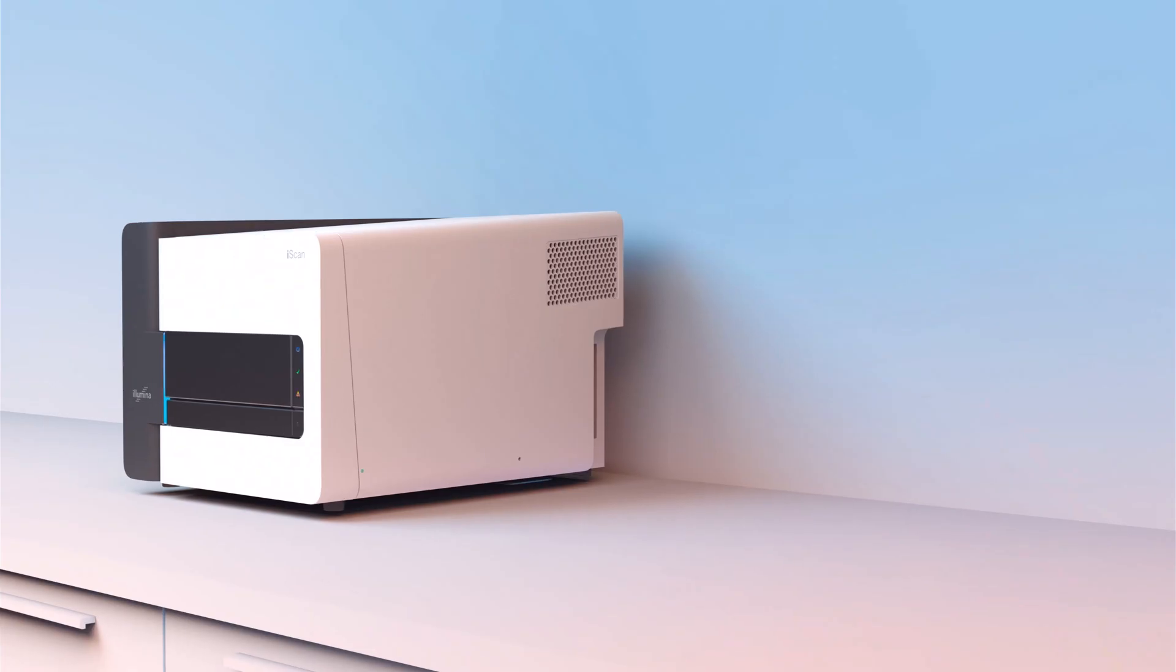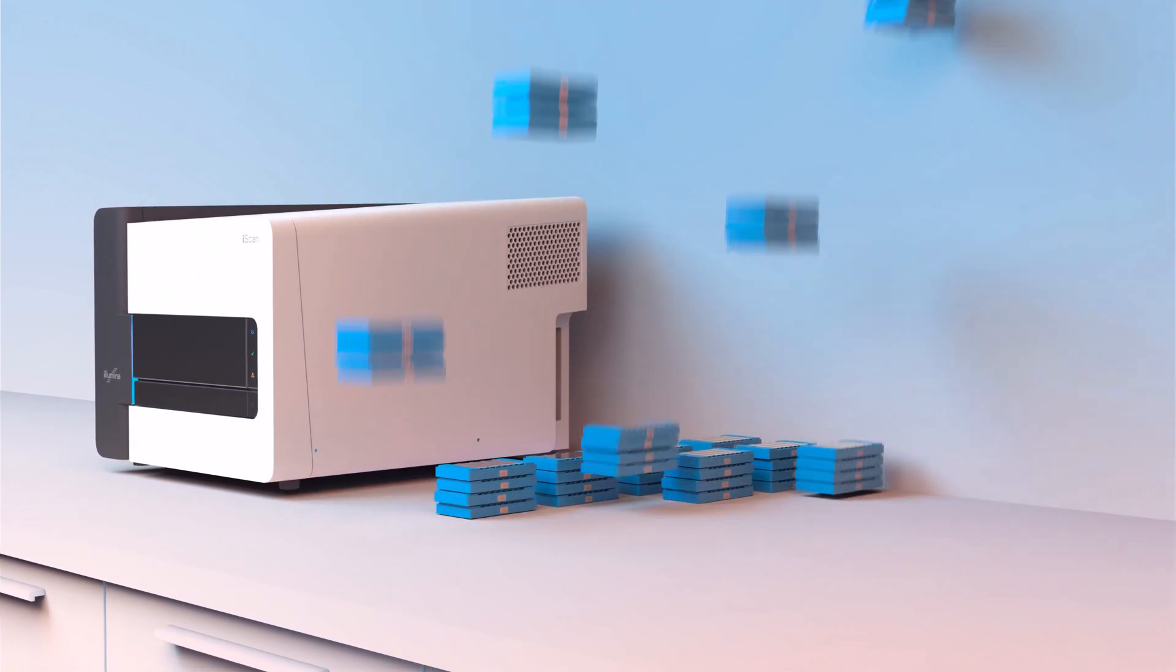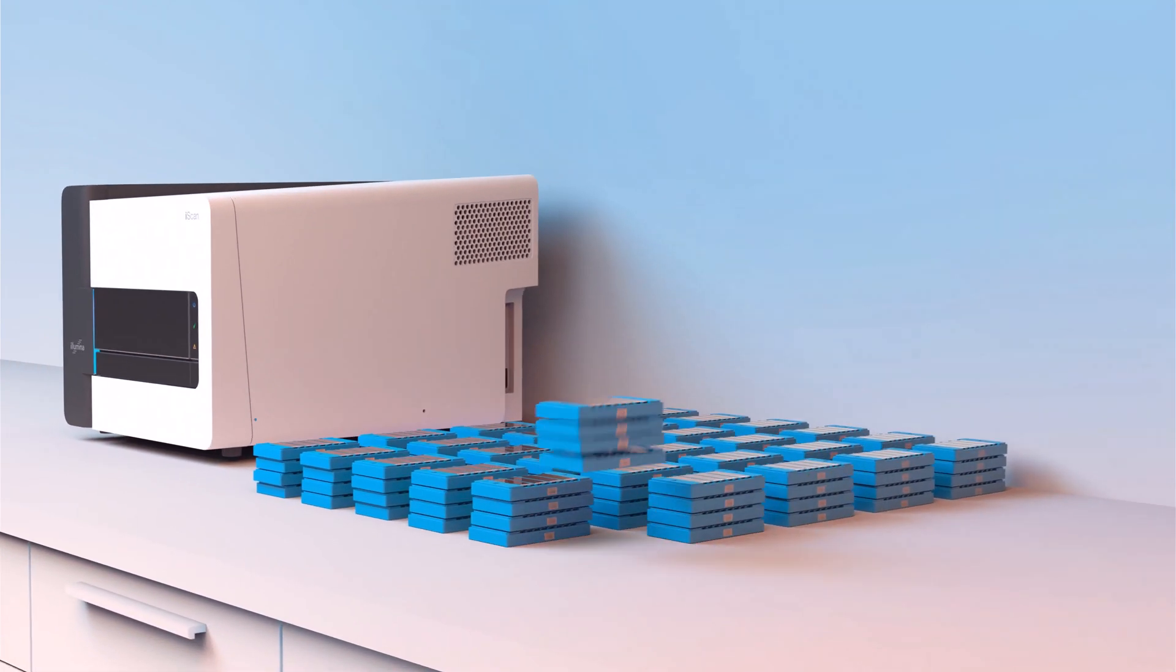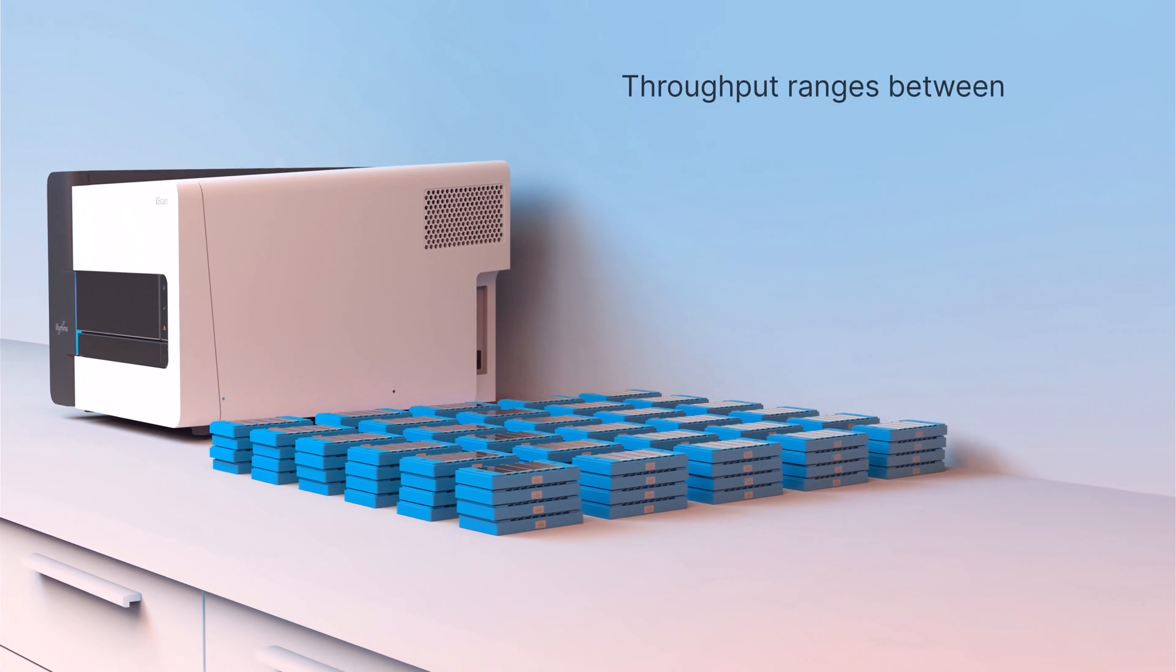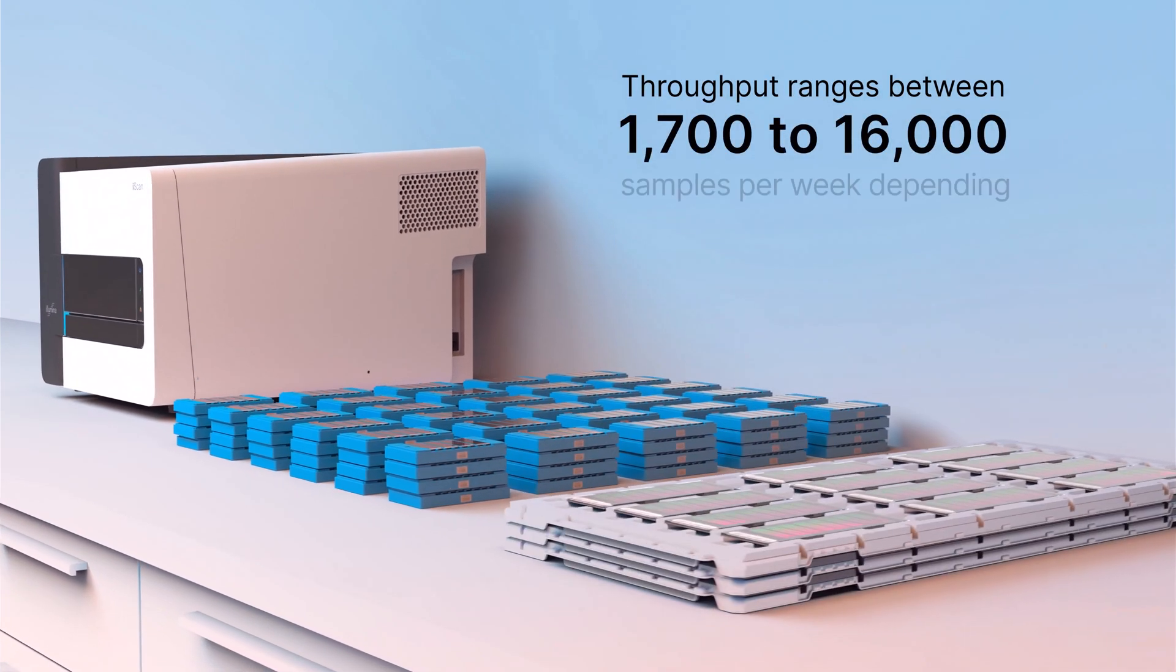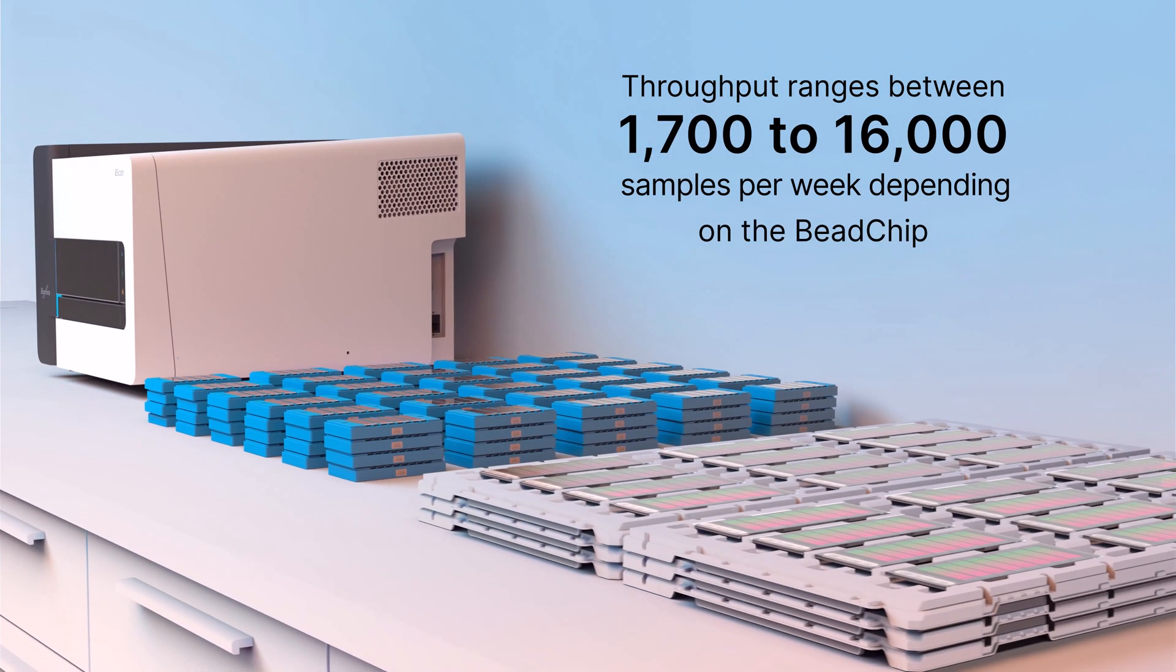The iScan system is designed for scalability and for high-volume projects, pharmacogenomic in nature or otherwise. The instrument's throughput ranges between 1,700 to more than 16,000 samples per week, depending on the bead chip.